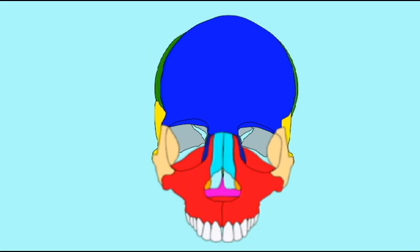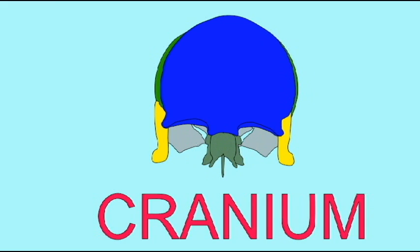The cranium is that aspect of the skull which forms a bony box around the brain to protect the delicate nervous tissue of the brain.